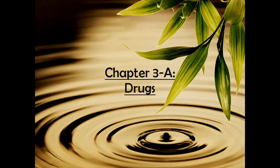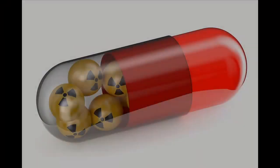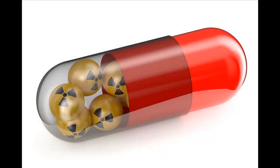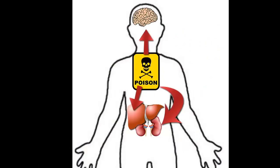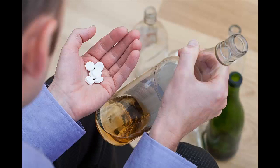Drugs. Another name for drugs is poison. Almost all drugs act by poisoning some other function of the body in order to achieve an effect. This includes recreational drugs, alcohol, and medications.